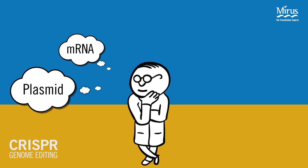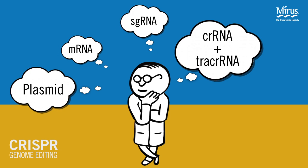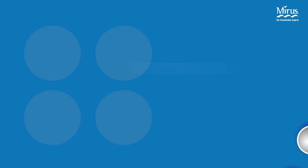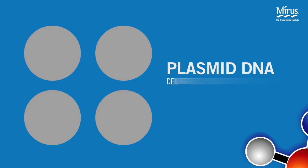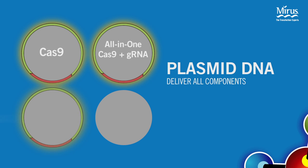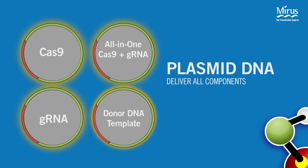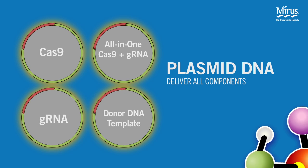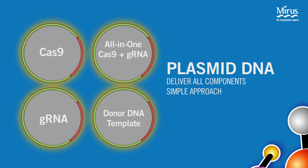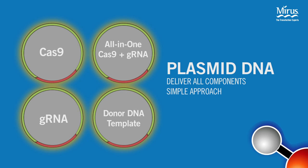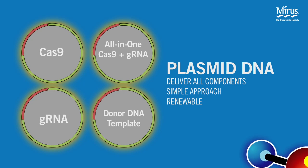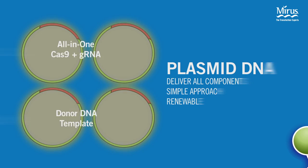Researchers are confronted with an array of approaches for CRISPR genome editing, each with their own advantages and disadvantages. All of the components required for CRISPR experiments can be supplied by plasmid DNA. This includes plasmids encoding Cas9 and guide RNA, as well as donor DNA for insertion. This straightforward approach offers the benefit that researchers can easily amplify the plasmids used in their experiments, and transfection of DNA is commonly performed in most cell biology laboratories.